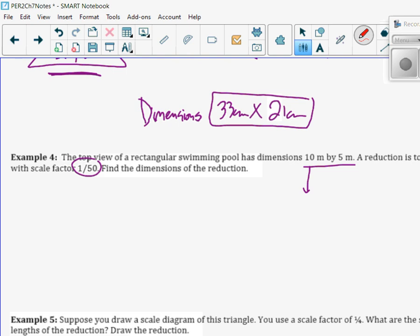10 meters, does anybody know how to change meters to centimeters? You move it two decimal places. So this would be 1000 centimeters and 5 meters would be 500 centimeters.